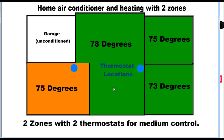Here we show an air conditioner and heating with two zones set up. This is for medium control. As you can see, we still lack the ability to control these far side rooms. The temperature hasn't really changed any. Basically, it's just to the point where you're only going to be able to control what you have a thermostat in there to control. If you don't have a thermostat in that zone that you want to control, then you're only going to get what you got.